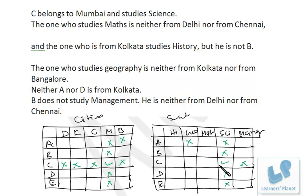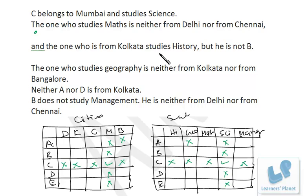Don't forget to put cross marks. Statement: The one who studies Maths is neither from Delhi nor from Chennai. Statement: The one from Kolkata studies History, but it's not B — meaning B is not from Kolkata and B does not study History.